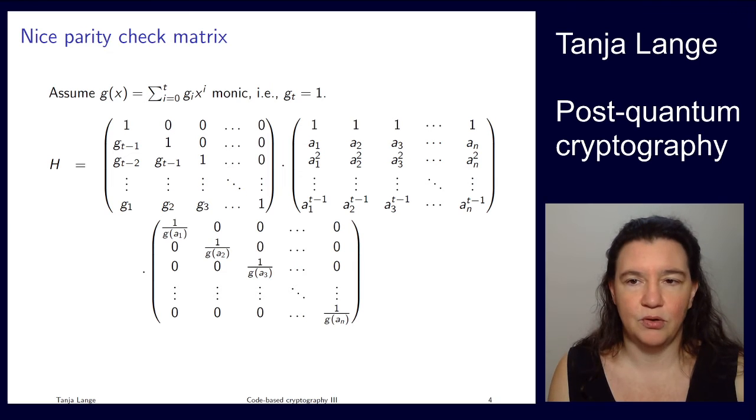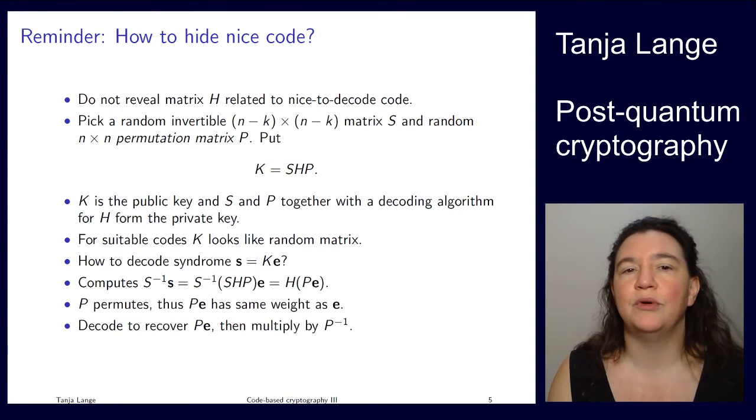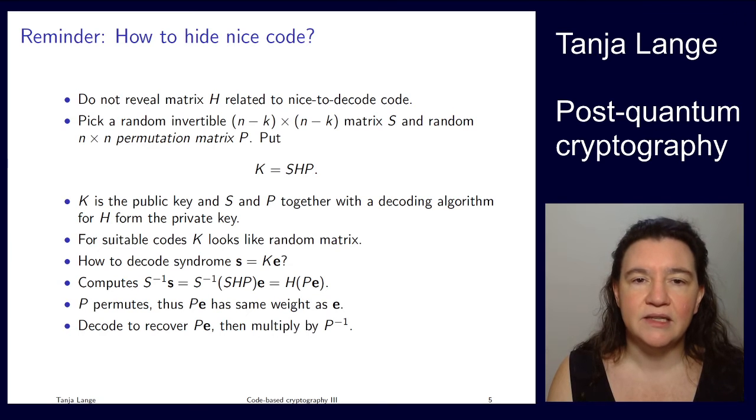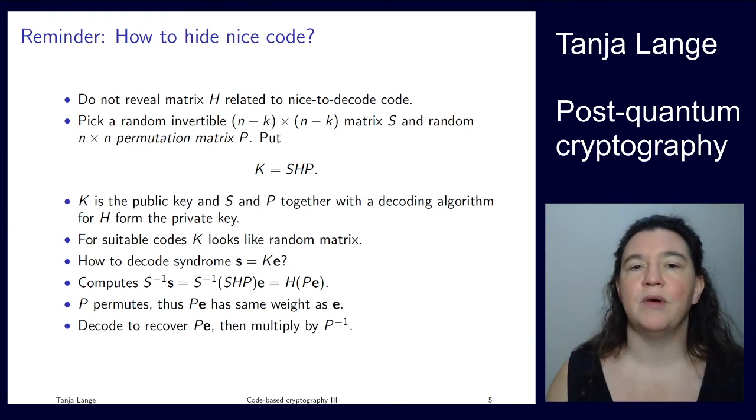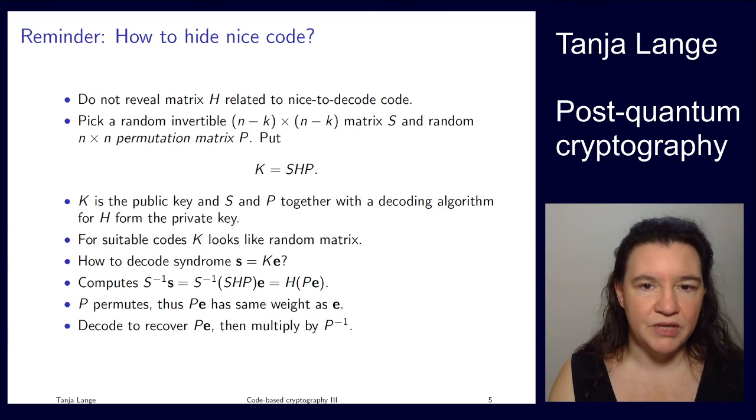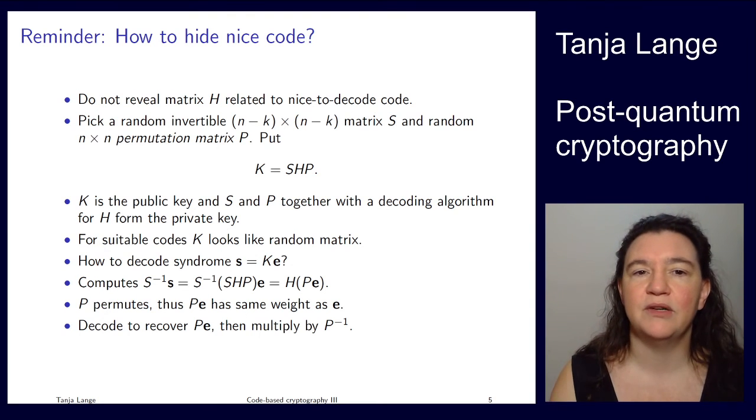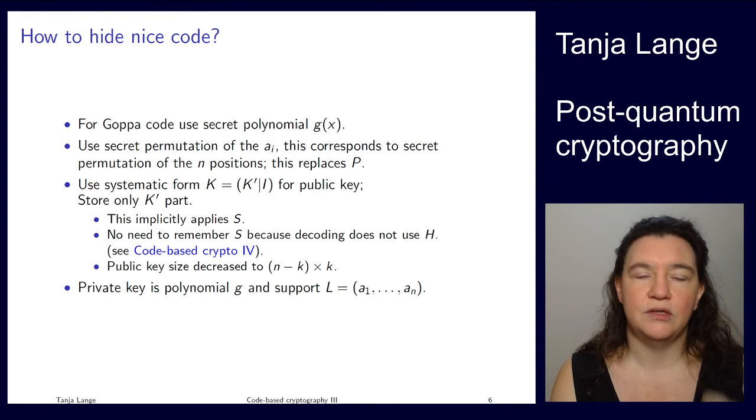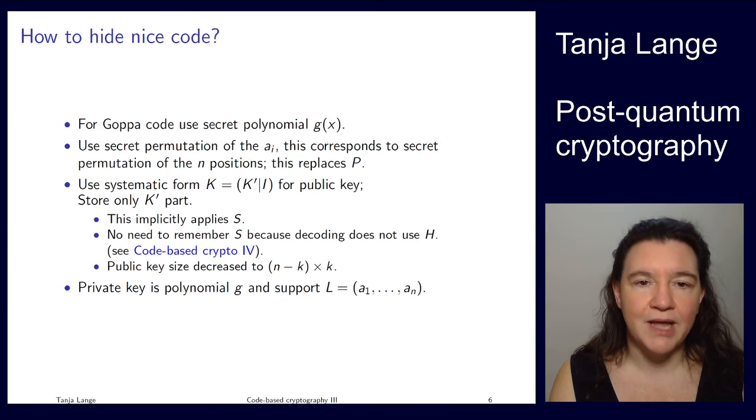But if you want to use a code in the code-based cryptographic system, let's think about the McEliece system there, then actually we want to hide the nice code. So this is just a copy of the old slide that we had, where I was talking about how we take this nice parity check matrix H, and left and right multiply by this S and P, where P was a permutation matrix, and S was a general invertible matrix. So there was an n minus k invertible matrix S, which scrambles this matrix, and there is an n by n permutation matrix P.